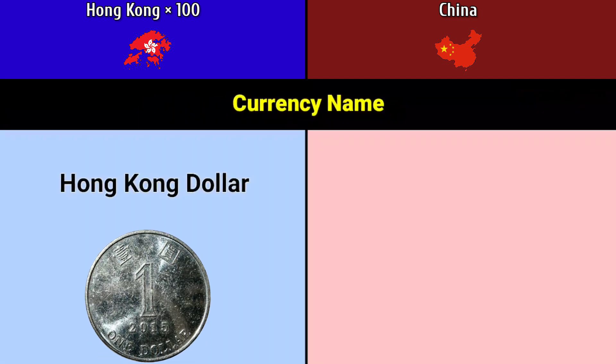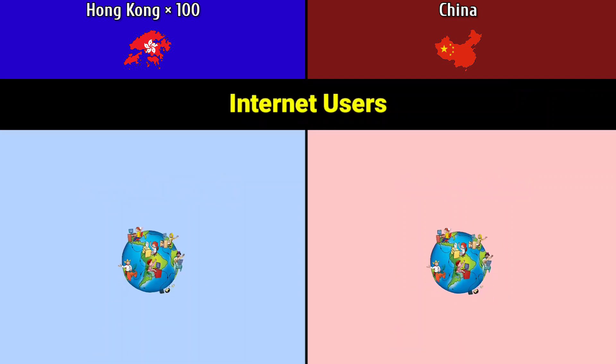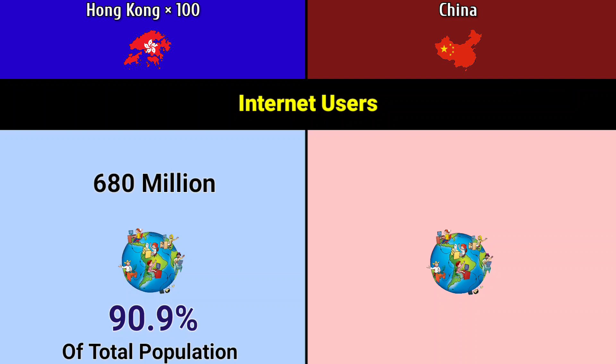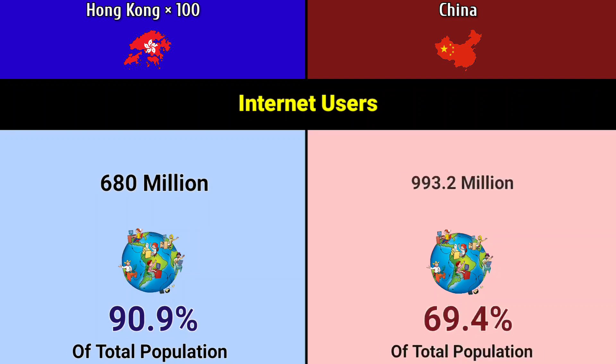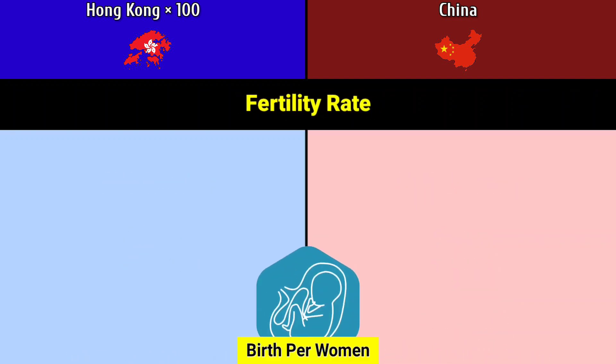Currency name: Hong Kong dollar, China Chinese yuan. Internet users: Hong Kong 680 million, China 993.2 million. Fertility rate births per woman: Hong Kong 0.7, China 1.7.